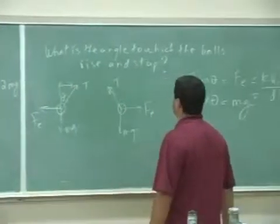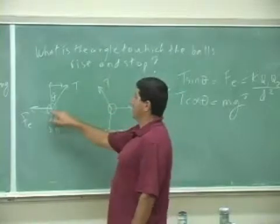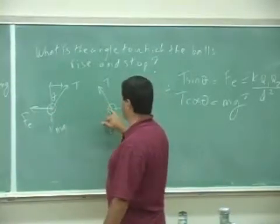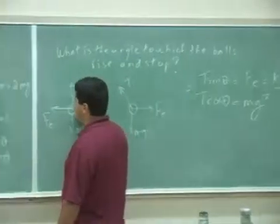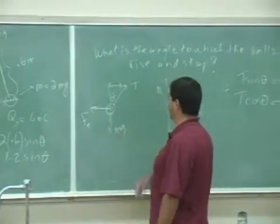What is the angle to which the balls rise and they will stop there? If they have the same mass, then they rise to the same height and then the picture looks like this. The tension on the left ball is to the right, the electrical force is to the left, mg is down.